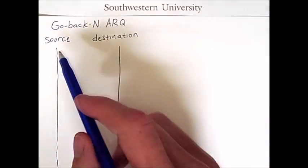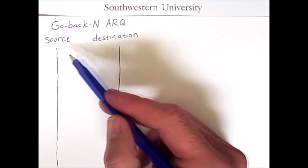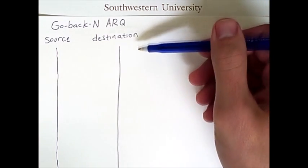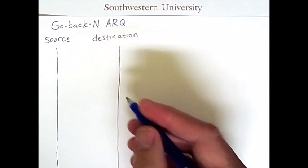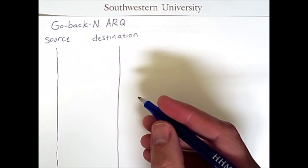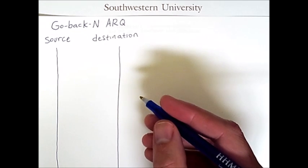We will once again start with a source and a destination. We have two lines indicating these systems and time will proceed downward. The source will send frames with sequence numbers to the destination. In this example, we'll be using sequence numbers 0 through 3.